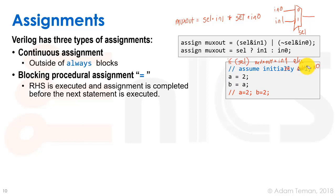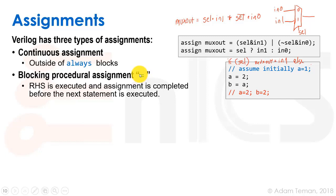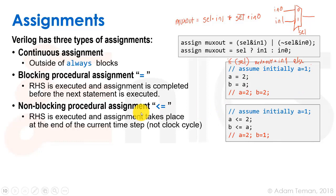There are two types of procedural assignments. A blocking assignment uses '='. The right-hand side is executed and the assignment is completed before the next statement. For example: assume a=1, then 'a = 2; b = a;' — since it's blocking, a becomes 2 first, then b gets a which is now 2. So at the end, a equals 2 and b equals 2.